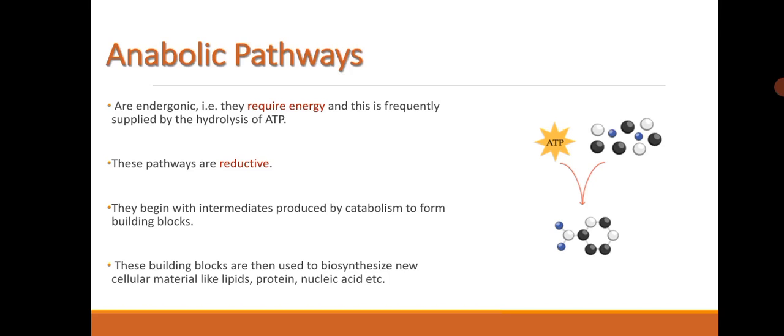Anabolic pathways are endergonic, that is they require energy and this is frequently supplied by the hydrolysis of ATP. These pathways are reductive. They begin with intermediates produced by catabolism to form building blocks, which are then used to biosynthesize new cellular materials like lipids, proteins, nucleic acids, etc.